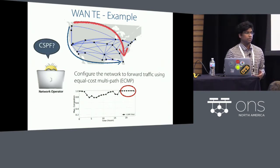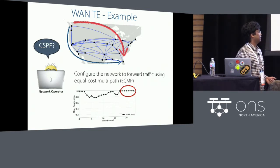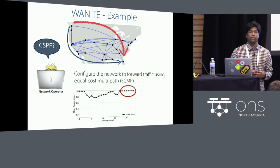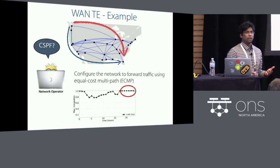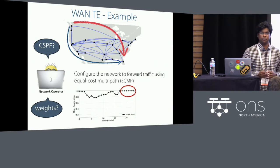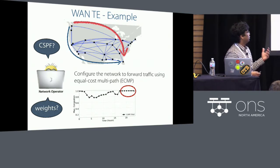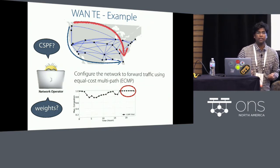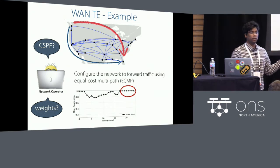So you might wonder if there is some other traffic engineering system that could improve performance and remove such bottlenecks. For example, you might look at CSPF — constrained shortest path — which picks paths based on available link capacities. But even if you decide to use CSPF, there are many different knobs to tune, such as what link weights to set. Before making changes to your network, you want assurance that performance will improve, or at least not degrade compared to what it currently gets.